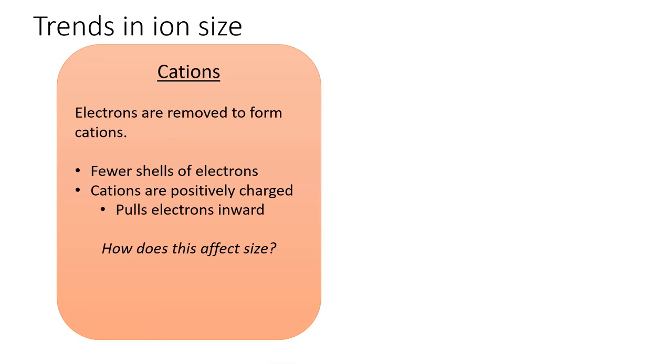And because cations are positively charged, the positive charge further pulls in on the remaining energy levels, shrinking the ion even further. Thus, cations are much smaller than their parent atoms.